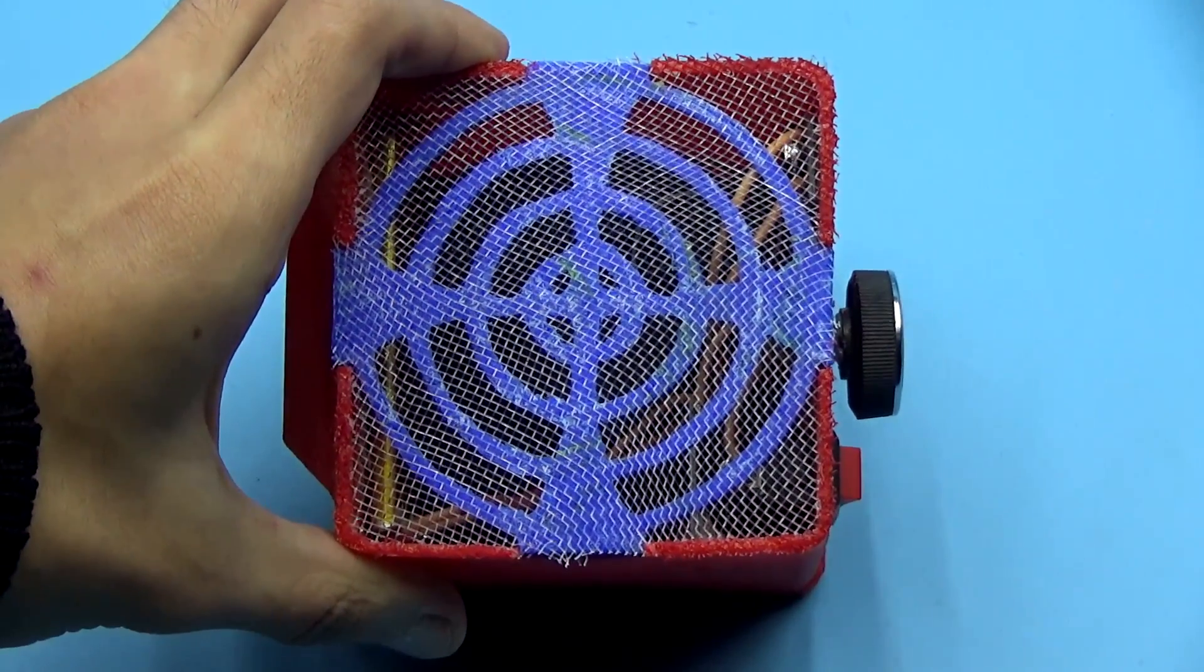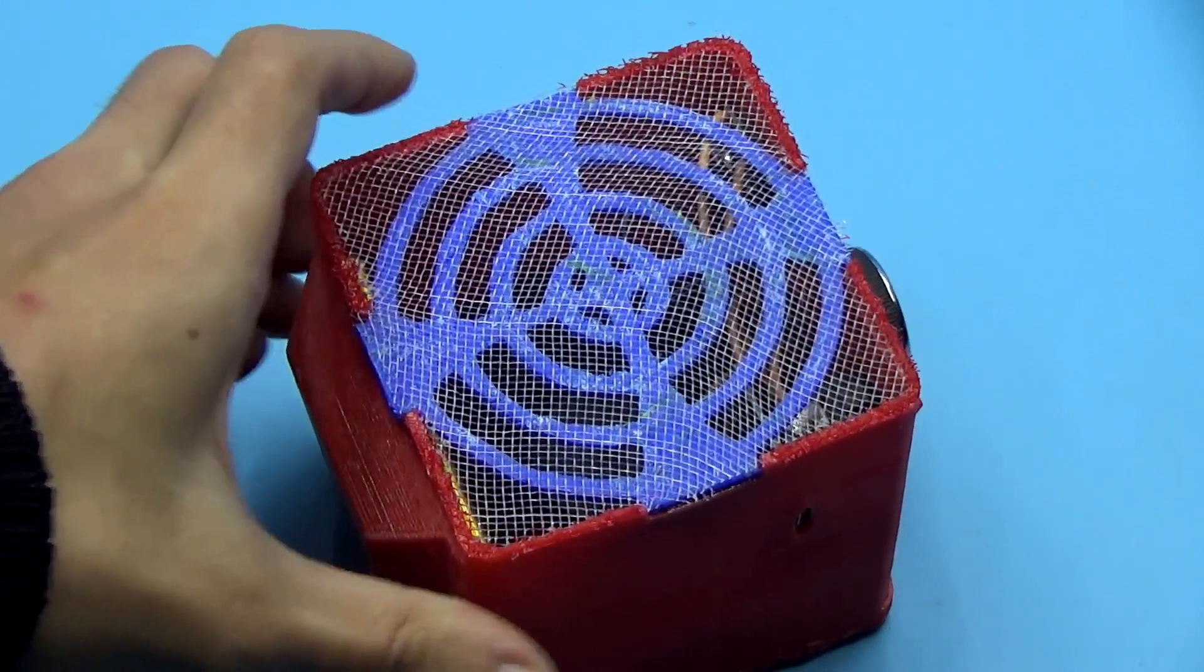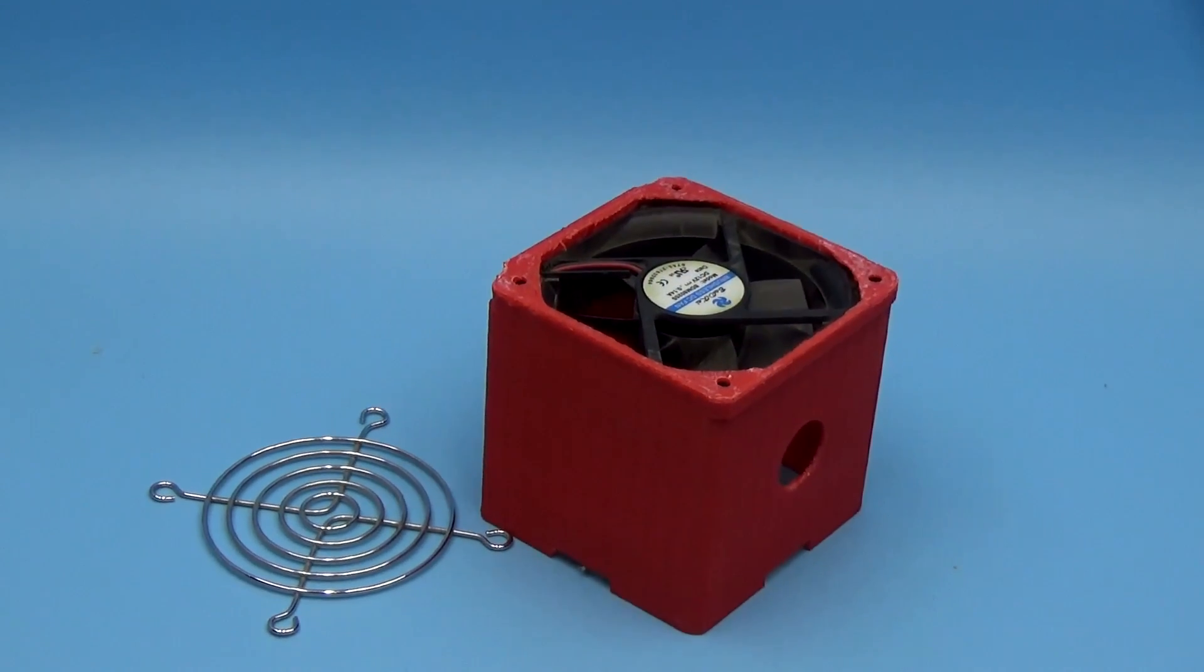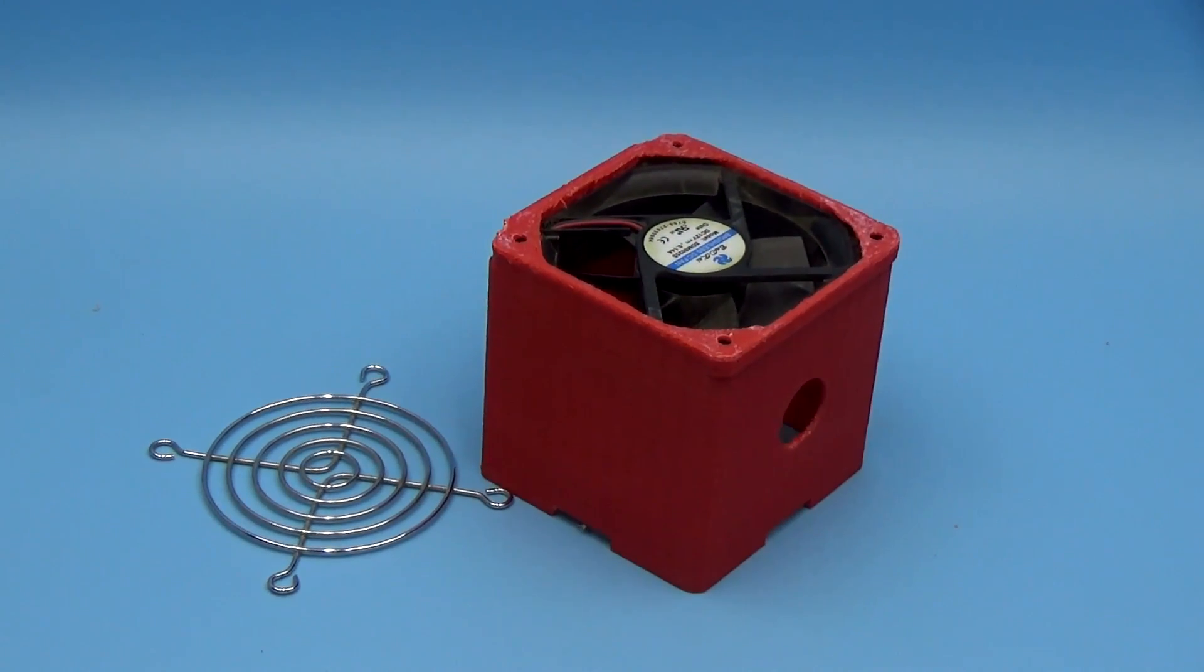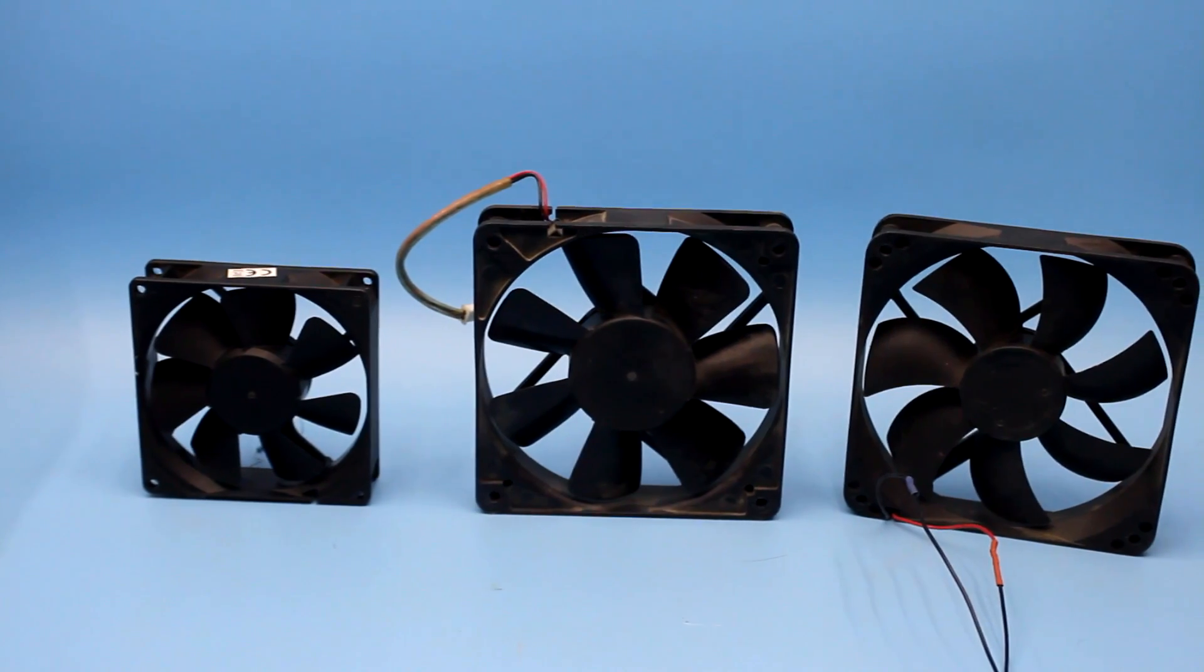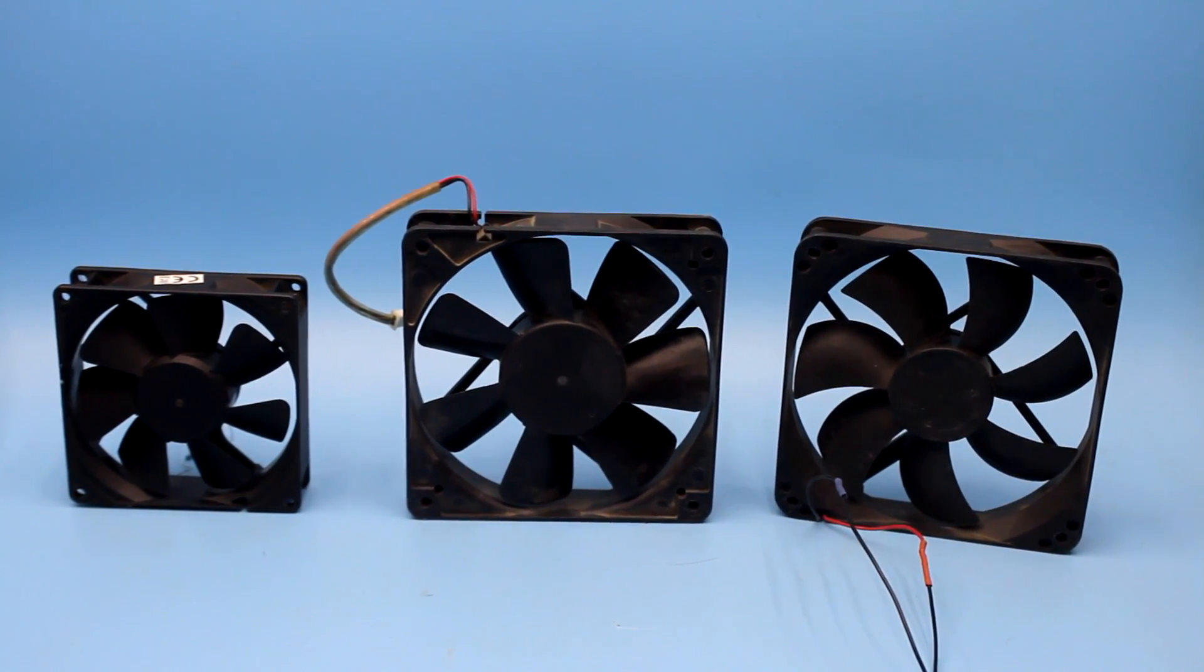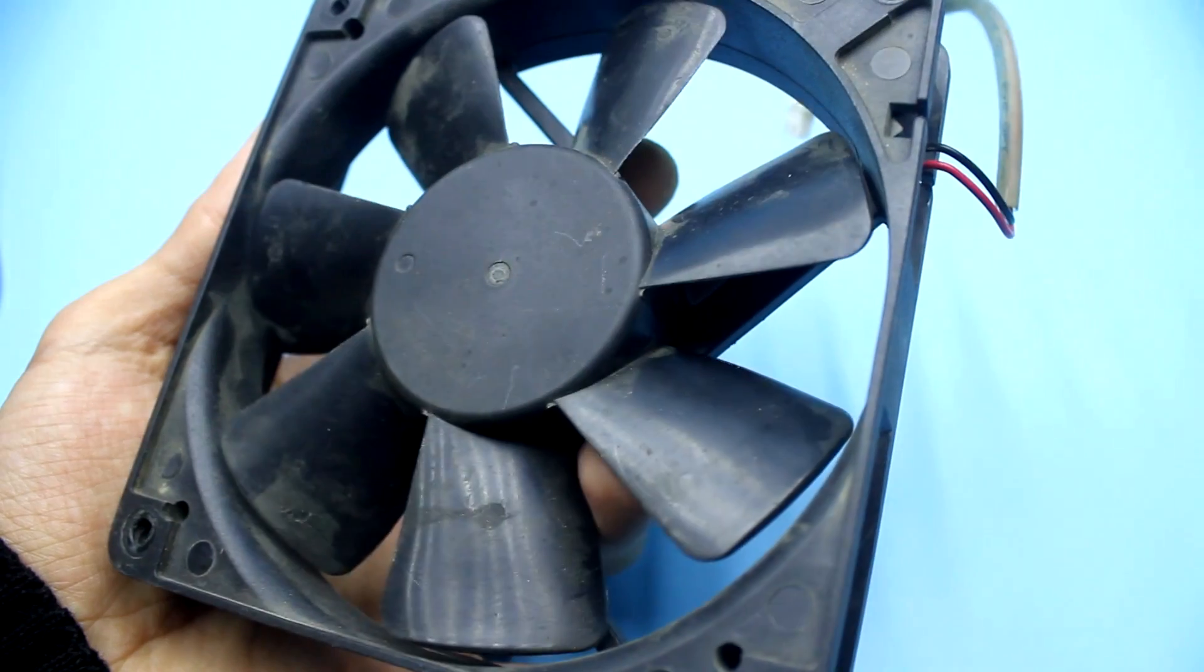The main drawback that has been noticed is the low performance of the fan, so if anyone decides to assemble a similar smoke absorber, it's worth using high-speed fans. If dimensions aren't important to you, then the use of 120mm fans is preferable.